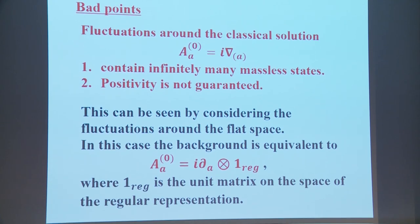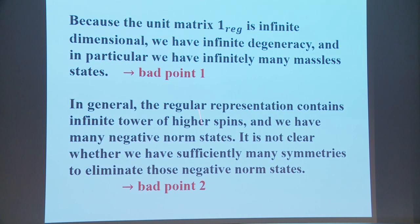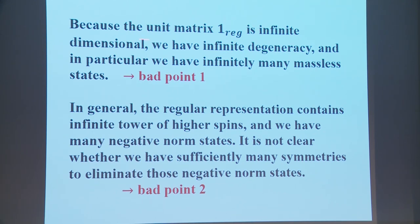Unfortunately there are also bad points. Fluctuations around the classical solution contain infinitely many massless states, and positivity is not guaranteed. This can be seen by considering the fluctuation around flat space, where the background is equivalent to i∂_μ times a unit matrix on the space of the regular representation, which is infinite dimensional — we have infinite degeneracy and infinitely many massless states. Also, the regular representation contains infinite towers of higher spins and many negative norm states, so it is not clear whether we have sufficient symmetries to eliminate those negative norm states.